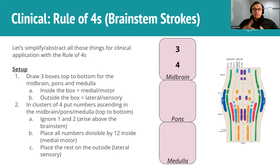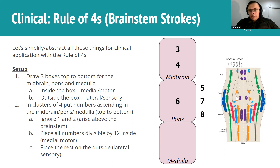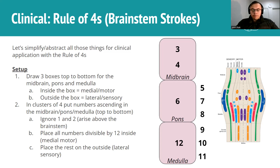Moving to the next cluster of four - five, six, seven, eight in the pons - only six is medial because that's the only one that's a factor of 12. Five, seven, and eight are lateral sensory. Seven is a bit of an exception because facial nerve has both motor and sensory components, but we put it laterally because it is located laterally. For the medulla cluster, twelve is medial motor, and nine, ten, eleven are on the outside as lateral sensory. Try and construct this diagram on your own, as it will be very useful for understanding brainstem strokes.